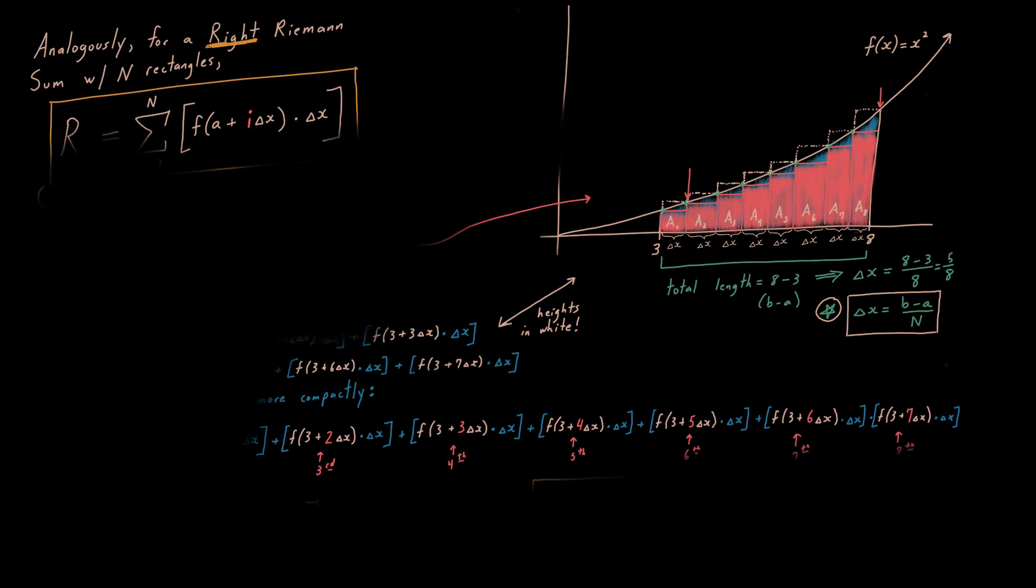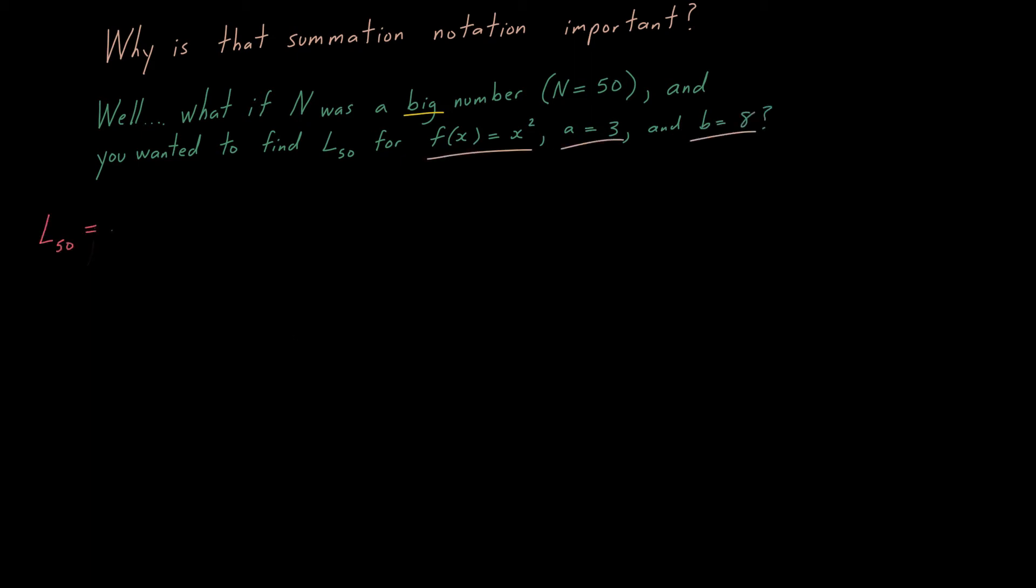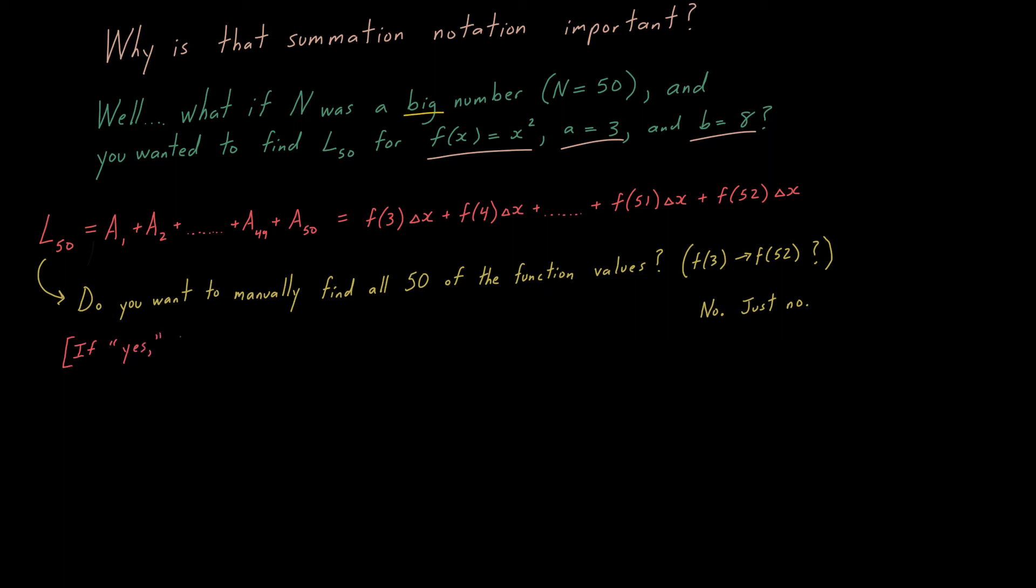So why all the need for all the fancy notation? Well, how about we deal with a situation where we're not dealing with a Riemann sum using a small number of rectangles? What if n was a big number, like n equals 50? And you wanted to find l sub 50 for the parabola with the same starting and ending x value. Now, notice in the previous problem, we had to compute eight function values. And that was pretty tedious in itself, but imagine 50. Imagine 100. Imagine 1000. Do you want to manually find all 50 of the function values here? f of three to f of 52 in this case? No. Just no. And if you said yes, then hey smart alec, how does l of a million sound? Huh. Gotcha. Instead, a better way to proceed is like so.